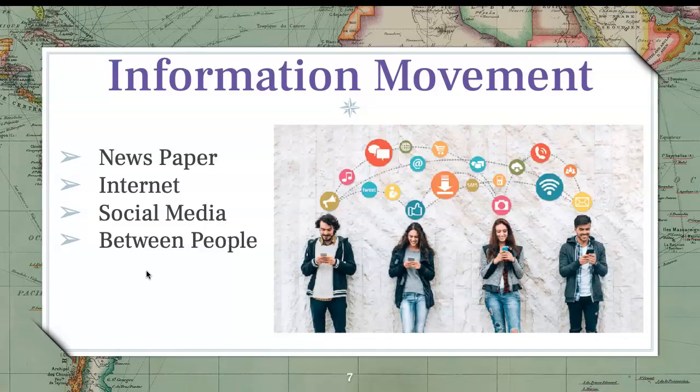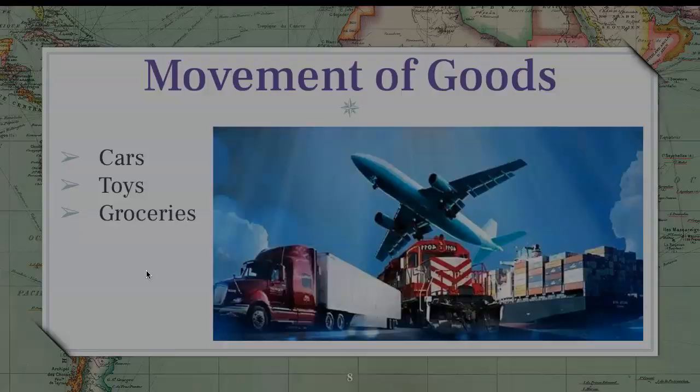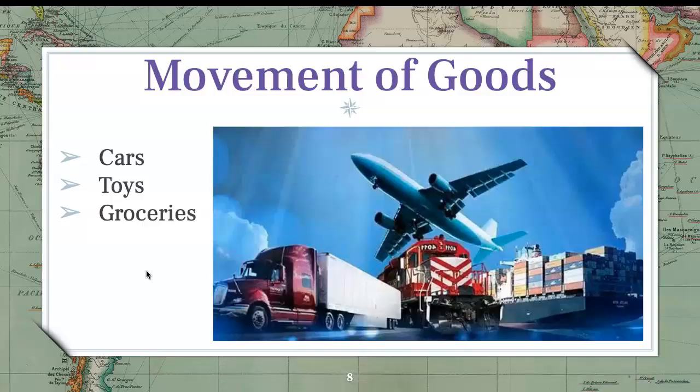The movement of information today is different from the movement of information in history. The way information moves today is with the newspaper, internet, social media, and by word of mouth — from one friend to another. The movement of goods has to deal with importing and exporting. You see trucks, trains, boats, and planes. Think of things like cars, toys, cell phones, or grocery items that come from a different country.